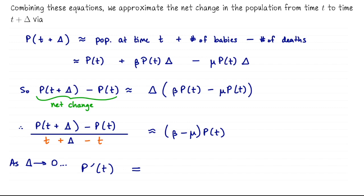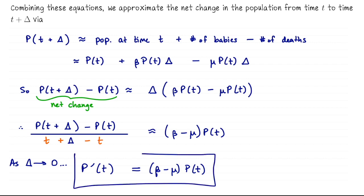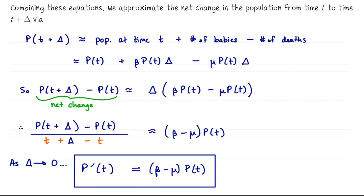On the right-hand side, we just have beta minus mu times p of t. So the equation p prime of t, or dp/dt, equals (beta minus mu) times p of t. This is true for any nice closed population where we don't have things like immigration or harvesting. What distinguishes one population from another is the behavior of beta minus mu — different scenarios might cause beta minus mu to look a little different.